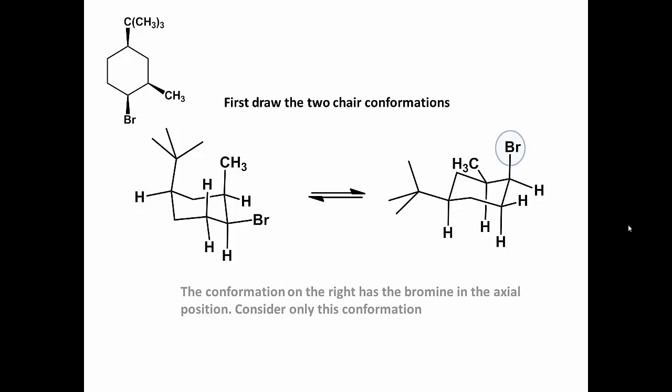The conformation on the right has the bromine in the axial position. Only consider this conformation because the bromine must be in the axial position. If it is in the equatorial position, an elimination reaction will not occur.